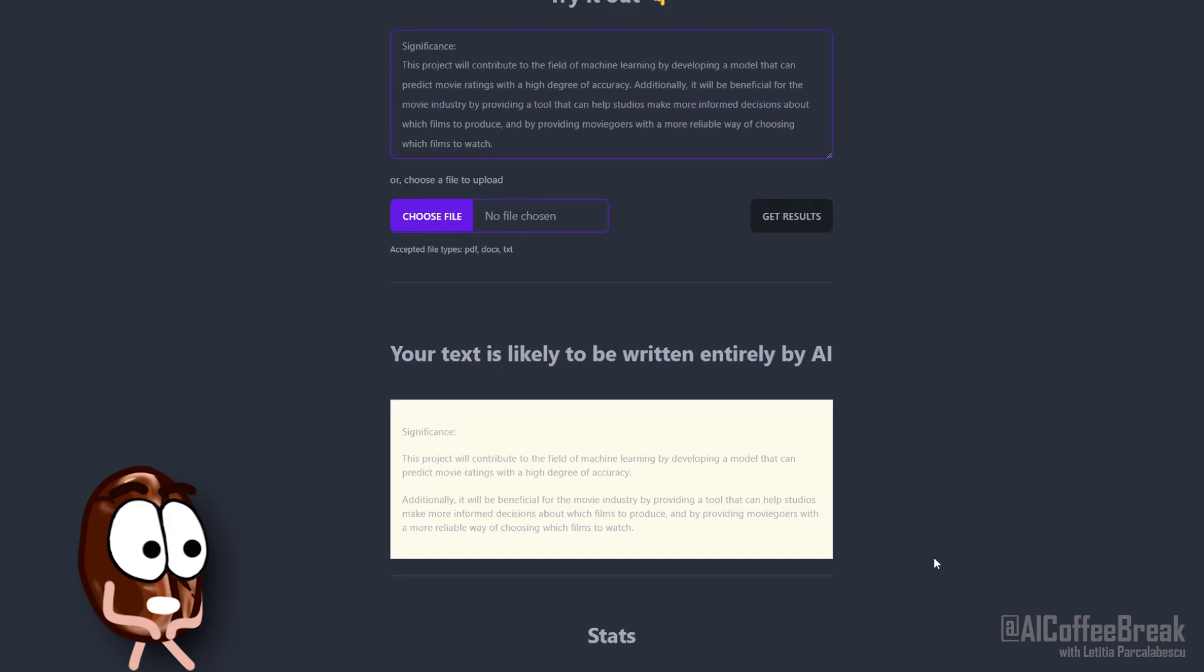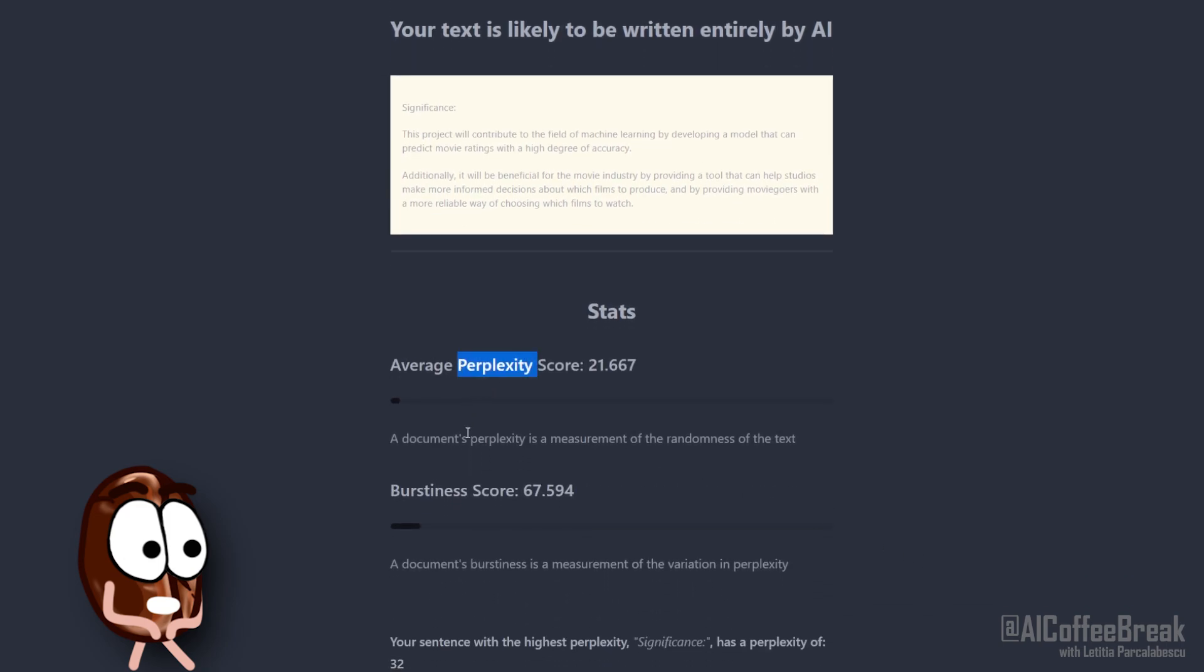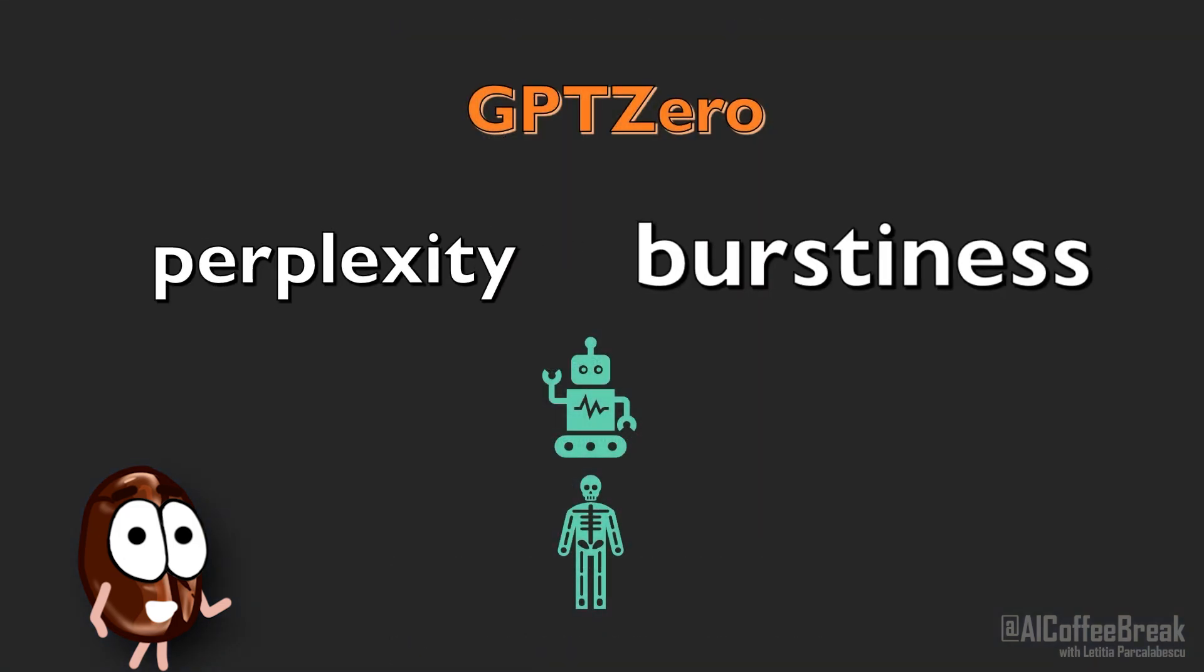The idea behind GPT-0 is to measure perplexity and burstiness. Because these two properties of the text vary between machine written content and human text.